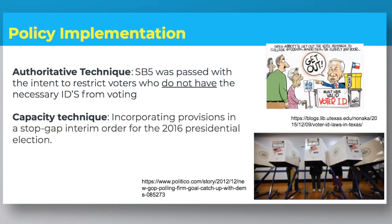Policy implementation: SB 5 was passed with the intent to restrict voters who do not have a necessary form of ID from casting their ballot, but later incorporated provisions in a stopgap interim order for the 2016 presidential election. The interim order opened up the polls by allowing voters to cast a ballot if they had a current utility bill, bank statement, or paycheck, and had signed a reasonable impediment declaration explaining why they lacked one of the seven acceptable forms of ID. This used both an authoritative and capacity technique.